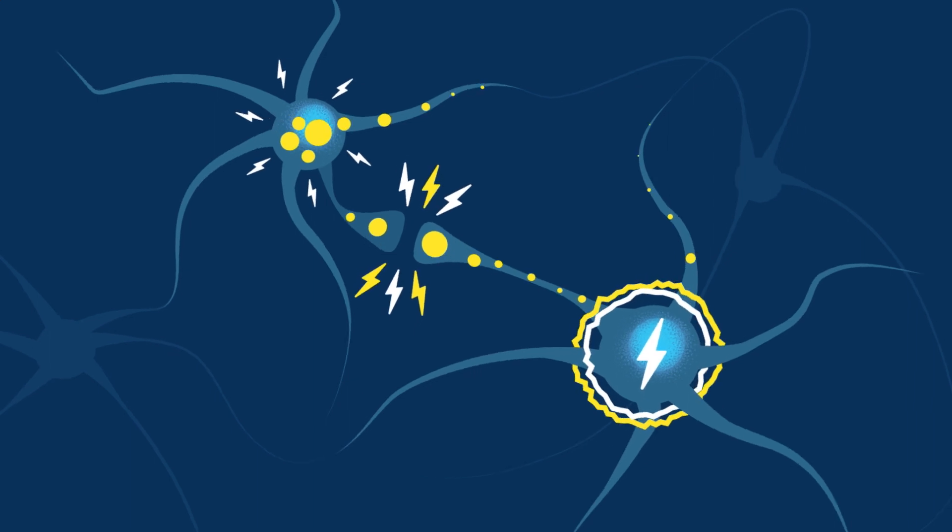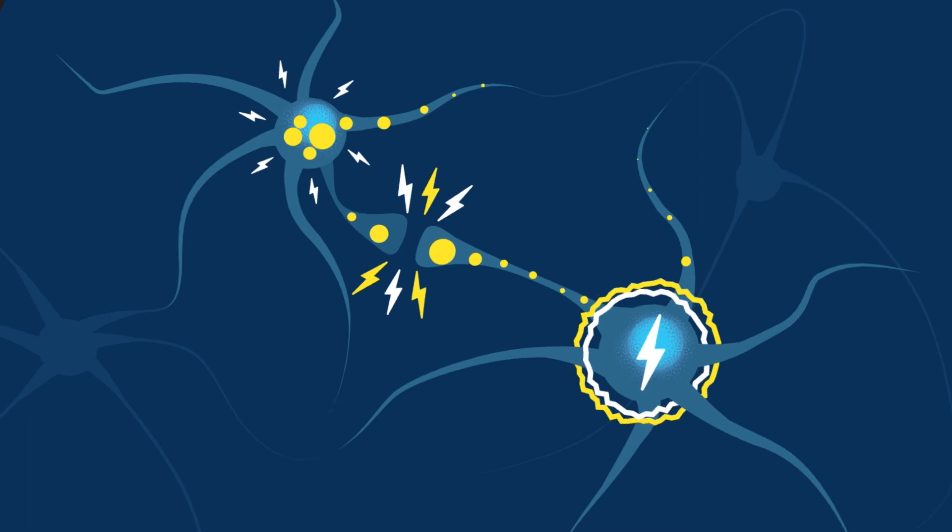An image of a brain inside a head appears on screen. The head and brain move quickly back and forth. Yellow and white dots and lightning bolts pulse and vibrate along the neural pathways of the brain.